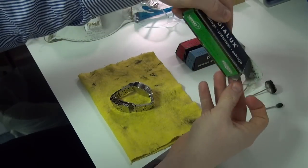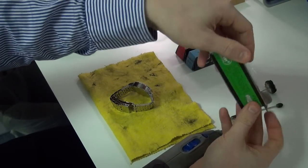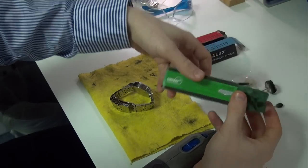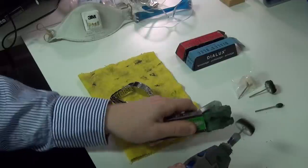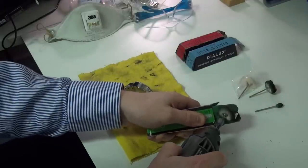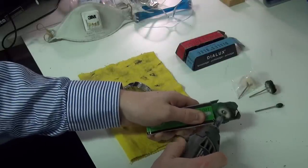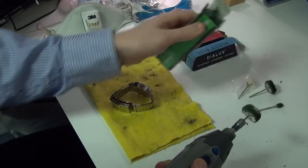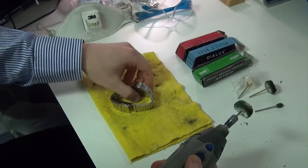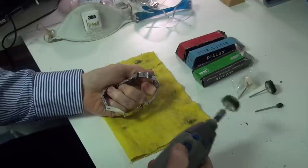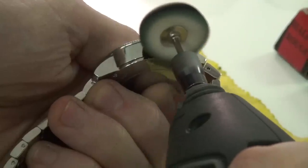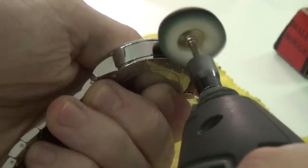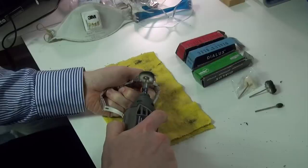And I would take your compound of choice, which for this one would be green, and put it on, and we'll just get a little bit on, like so. As you can see, I'm going to just apply it evenly to the area where the scratches are.